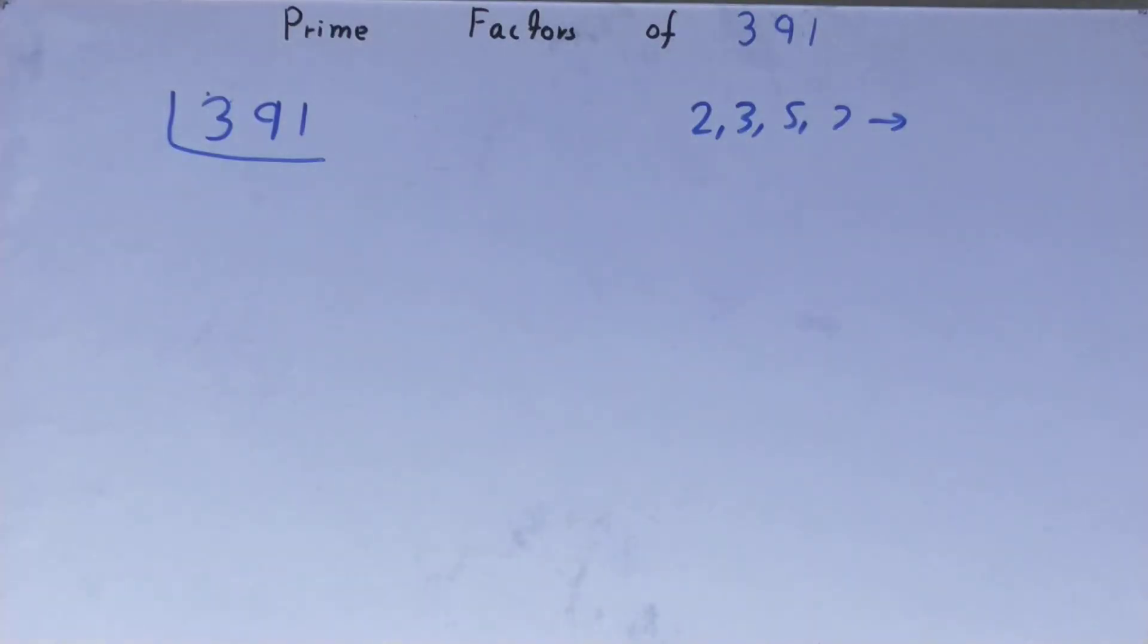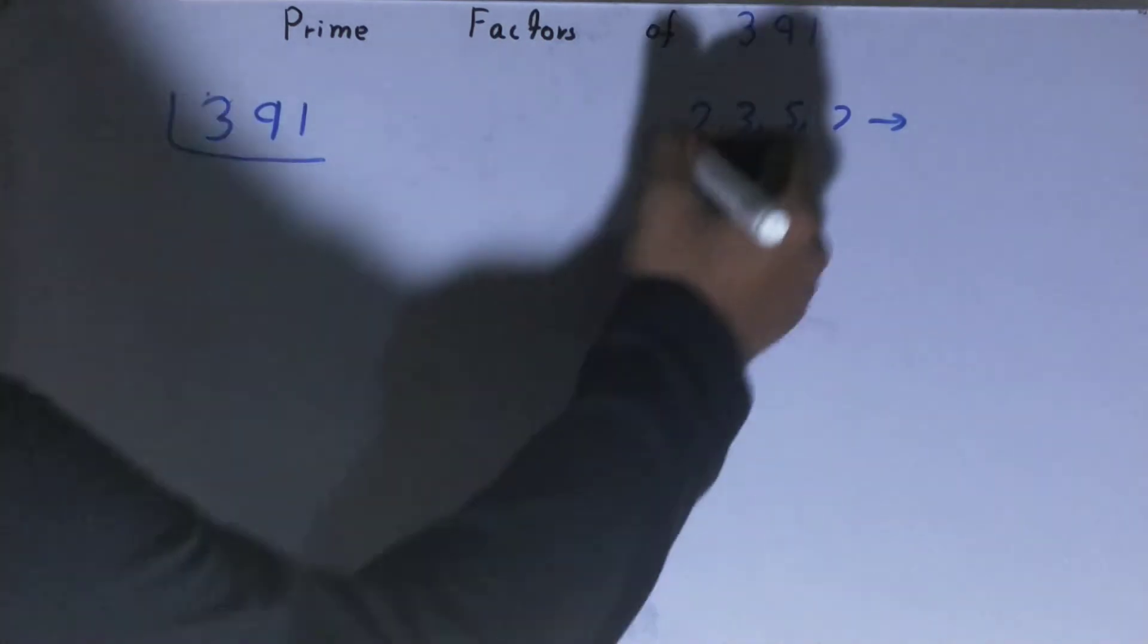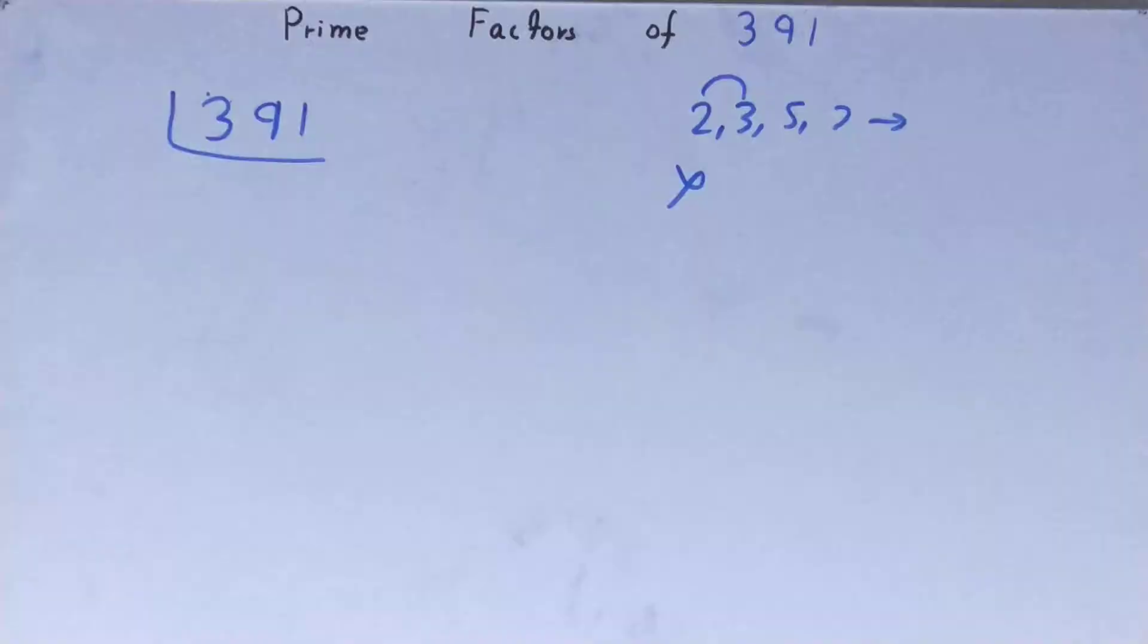What we'll do, we'll start with the lowest prime number we have, that is 2. Is the number 391 divisible by 2? Clearly not, because it is an odd number. So we will go to the next lowest prime number, that is 3. Is it divisible by 3? 300 is divisible, 91 is not divisible by 3.